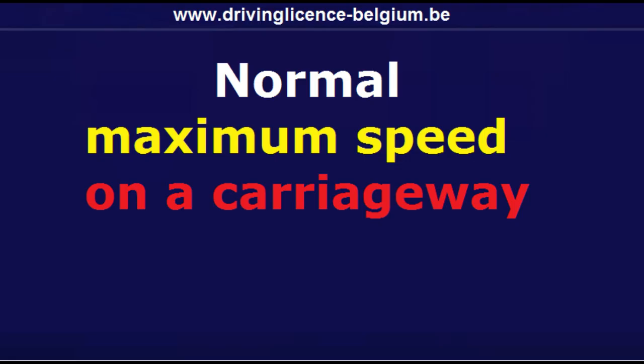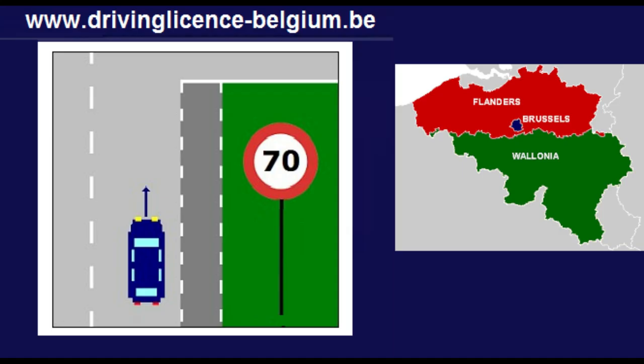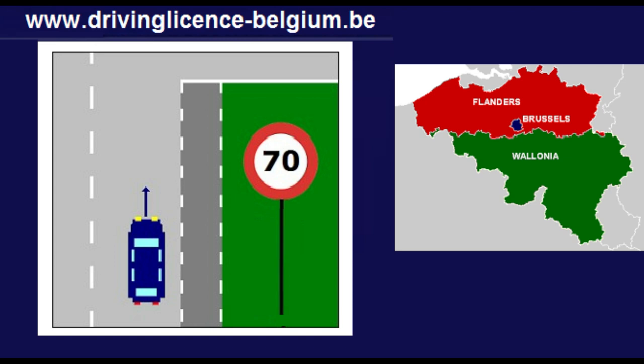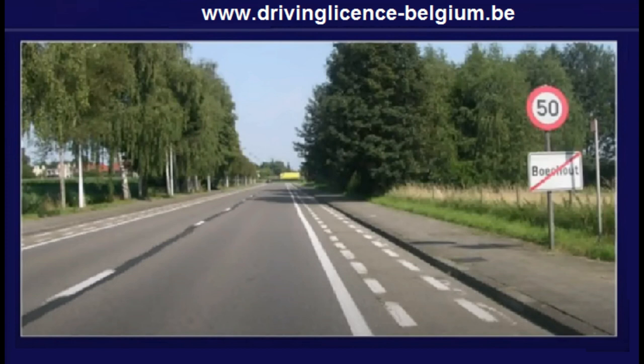Maximum speed. The maximum speed limit on the lanes of a regular carriageway is, in Flanders, 70 kilometers per hour; in Wallonia, 90 kilometers per hour; and in the Brussels region, 70 kilometers per hour. Exception: when traffic signs impose a different maximum speed limit.